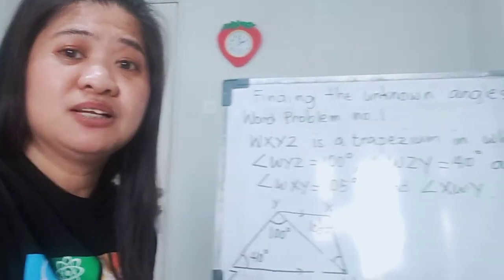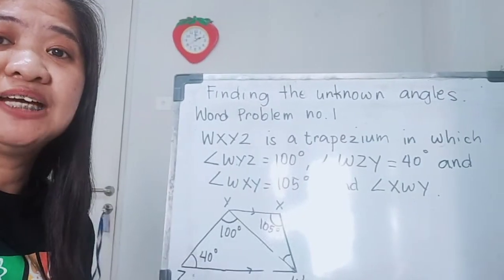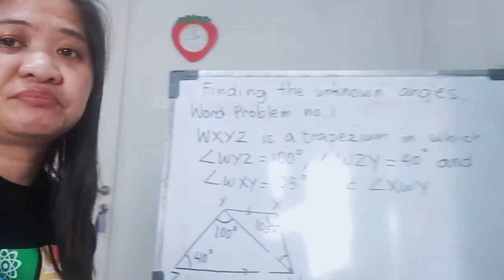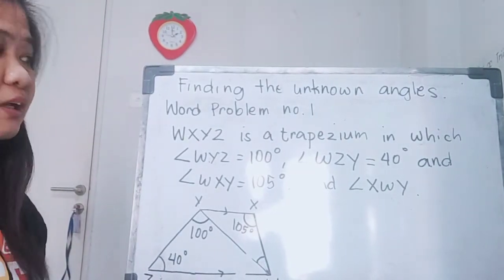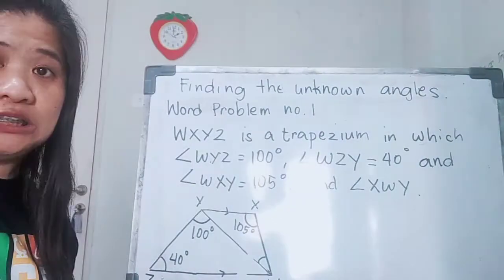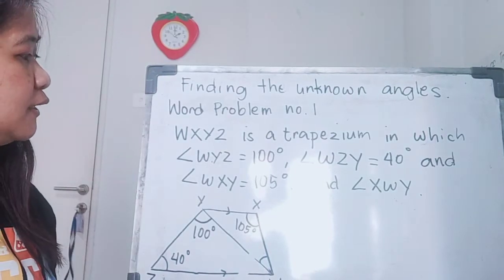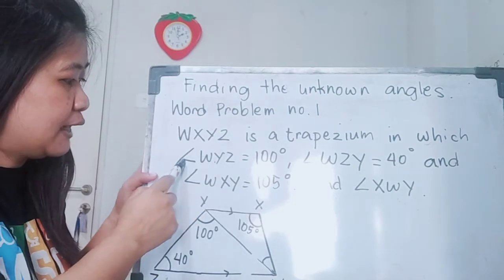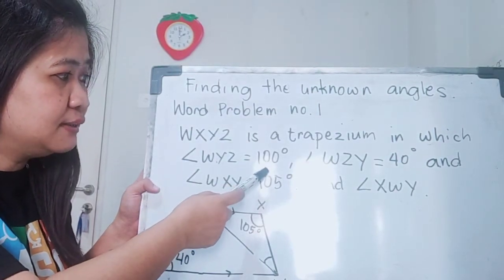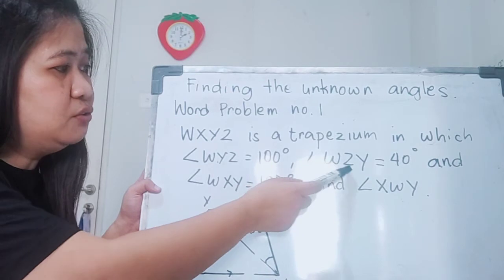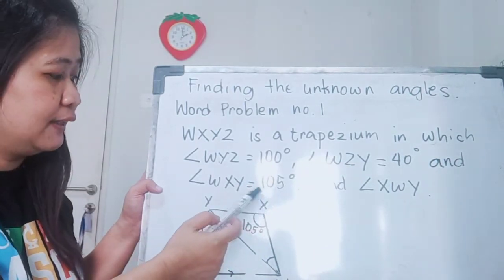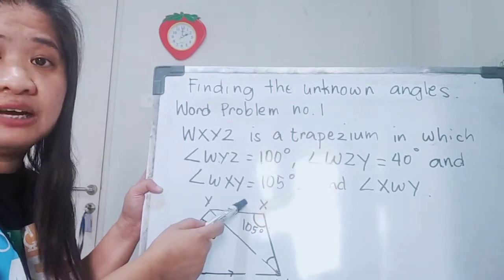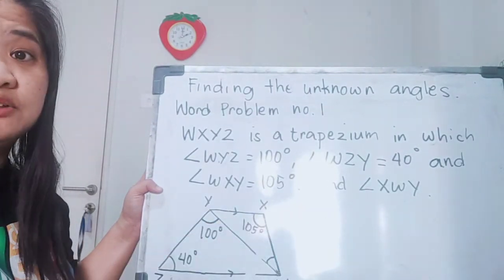For the first problem, let me read it for you. WXYZ is a trapezium, in which angle WYZ is equal to 100 degrees, angle WZY is equal to 40 degrees, and angle WXY is equal to 105 degrees. Find angle XWY.